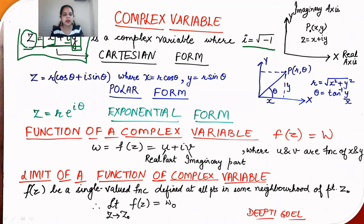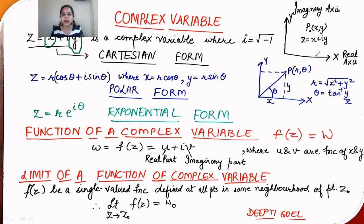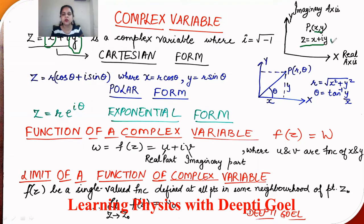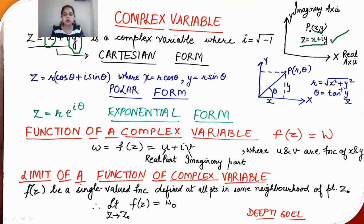We can represent a complex variable in the Cartesian form, polar form, or exponential form. In the Cartesian form, x is the real part and y is the imaginary part. If we plot these as coordinates — x on the real axis and y on the imaginary axis — a point p with coordinates (x, y) represents the complex number z = x + iy.